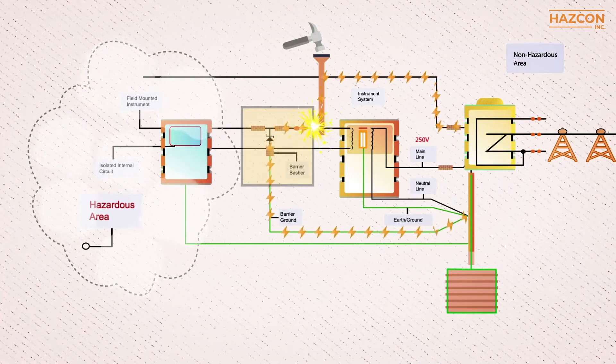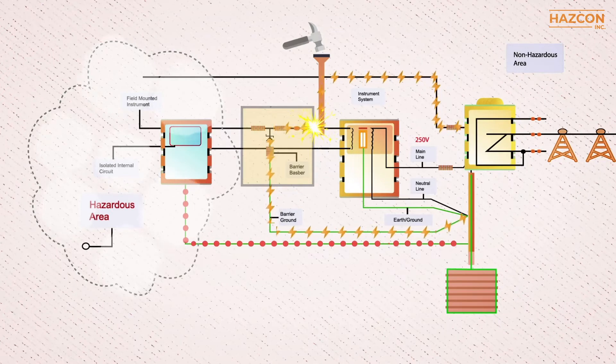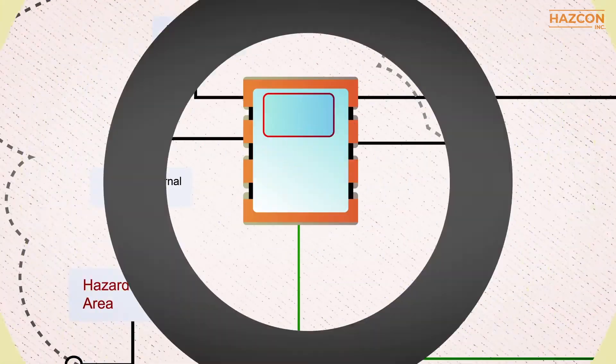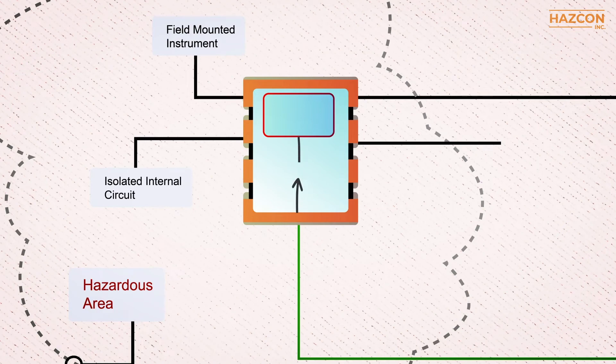Also, the metal enclosure of the field-mounted instrument located in a hazardous location is directly connected to the main ground to prevent a ground loop between the IS barrier and the intrinsically safe device. It must be noted that the internal circuit of the intrinsically safe device is isolated from the external enclosure.